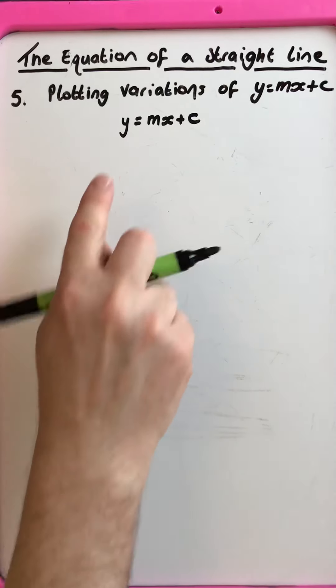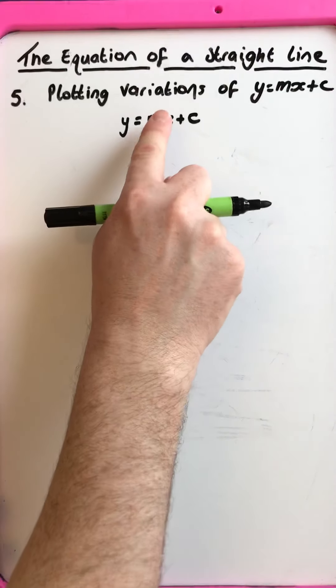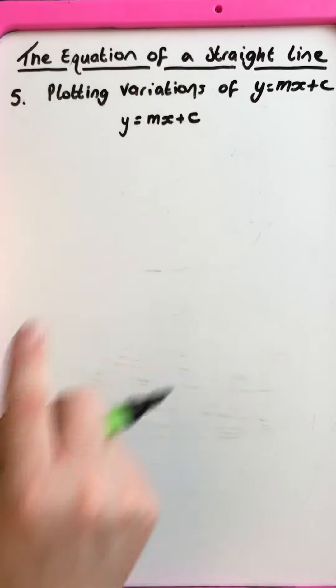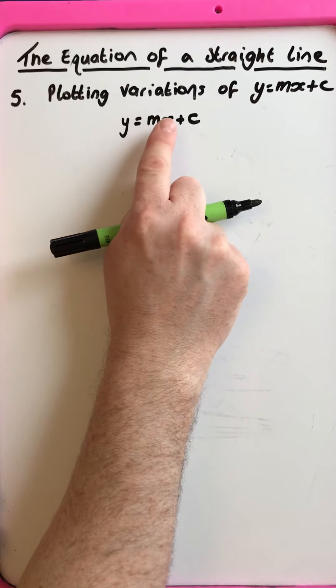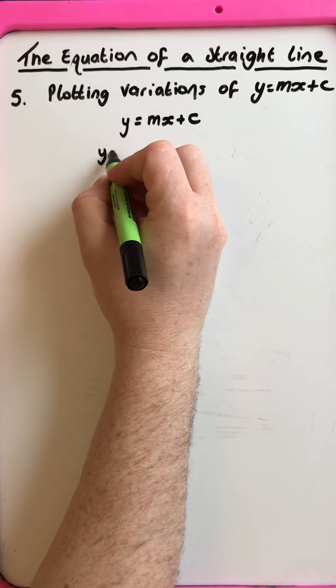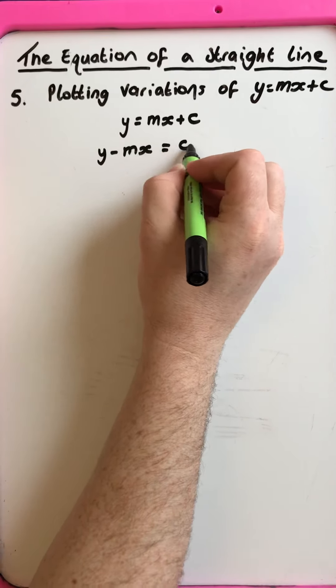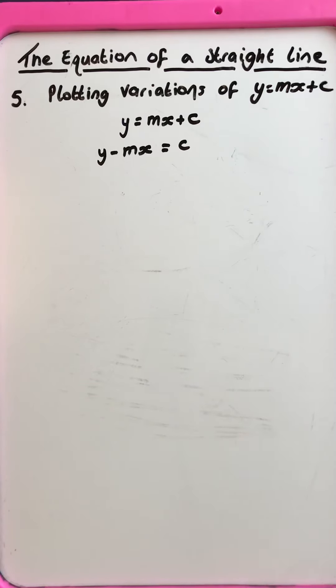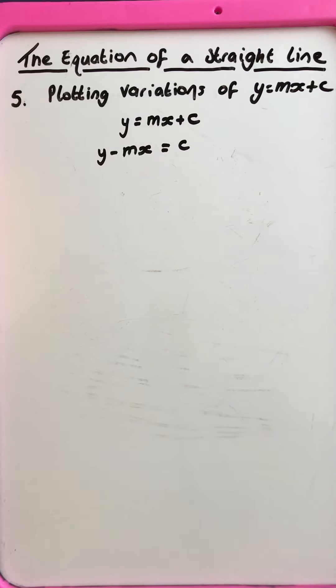But if we change this equation about, if we change the left hand side equal to the right hand side and not just the y is equal to the gradient multiplying by x plus the intercept, if we were to look at it like this, this is also the equation of a straight line, so that's a variation of y equals mx plus c.